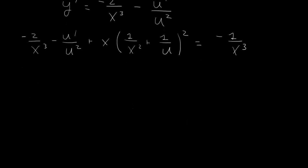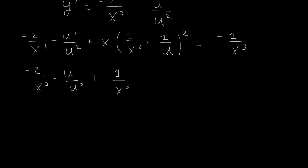A little bit messy, but we have to simplify this by expanding the quadratic term. We have minus 2 over x cubed minus u prime over u squared, then multiplying through by x: the square of 1 over x squared times x gives 1 over x cubed; the cross term is 2 over x squared times u times x, giving 2 over xu; and then plus x over u squared.